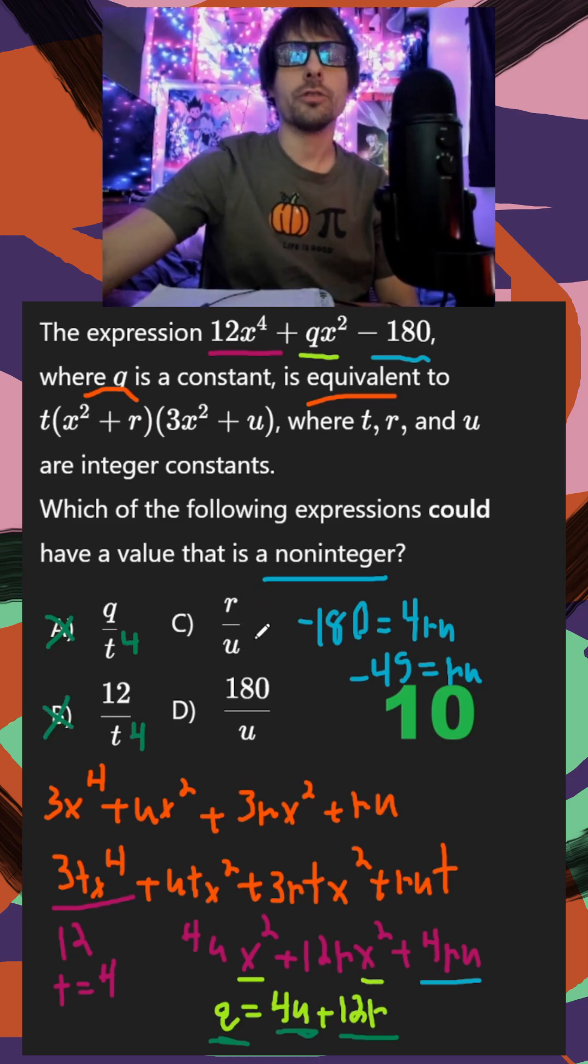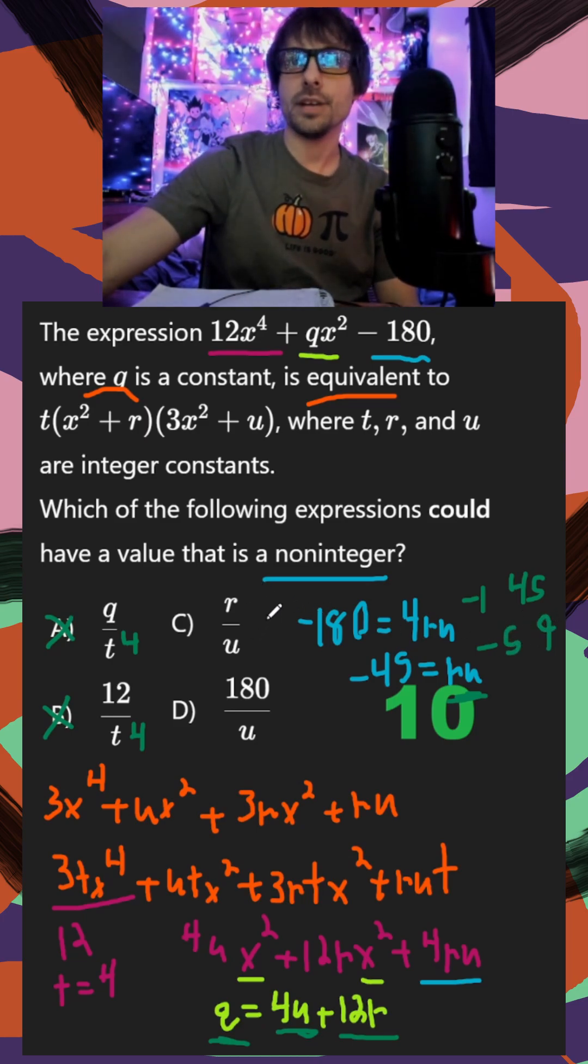In c, r over u. So this is where we want to remember, r times u is negative 45. Therefore, r and u just have to be factors of negative 45. So that could be 1 and 45 or negative 1 and 45. But it could also be like negative 5 and 9. Well, I could do negative 5 over 9, or 9 over negative 5 and both of those are not going to be integers. So c definitely already works.